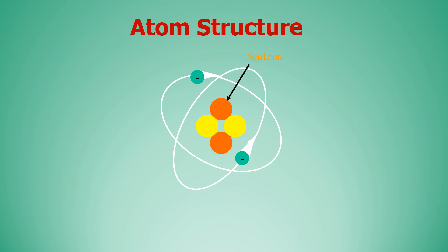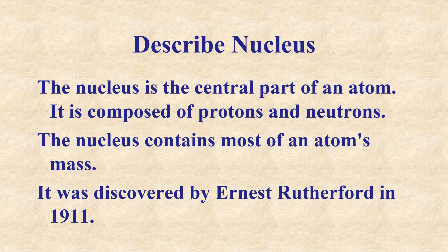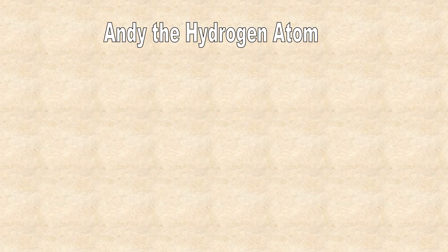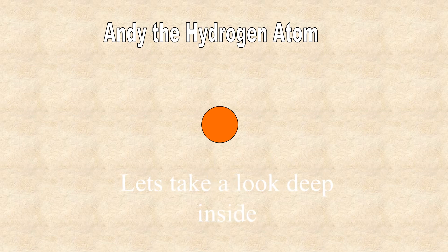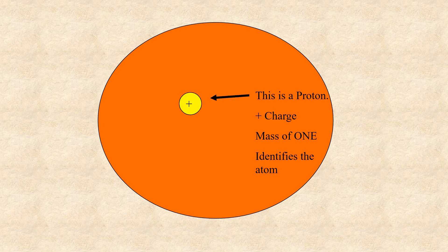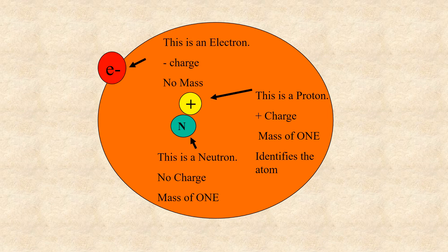Now let us describe the nucleus. The nucleus is the central part of an atom. It is composed of protons and neutrons. The nucleus contains most of an atom's mass. It was discovered by Ernest Rutherford in 1911. If you look deep inside a hydrogen atom, you see a proton — positive charge, mass of 1 — which identifies the atom. There is also a neutron with no charge, and outside is the electron with a negative charge and no mass.